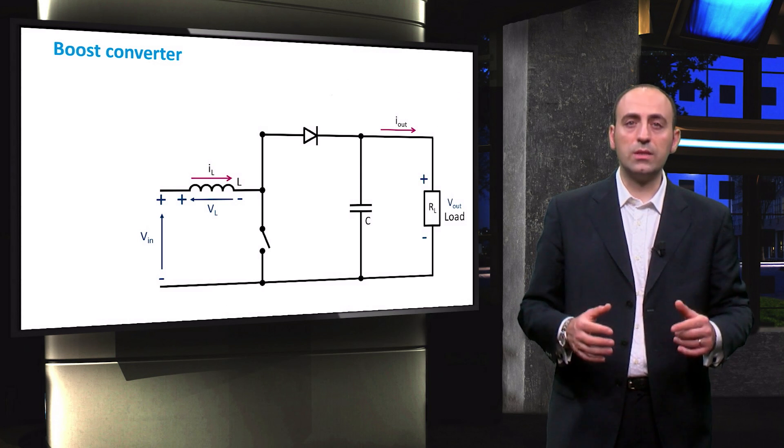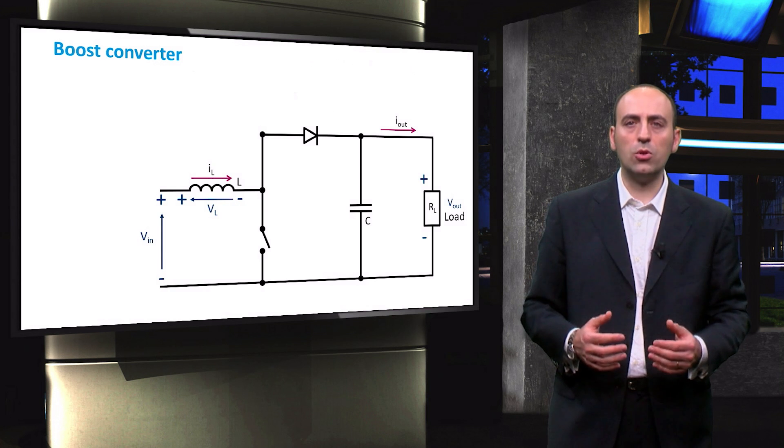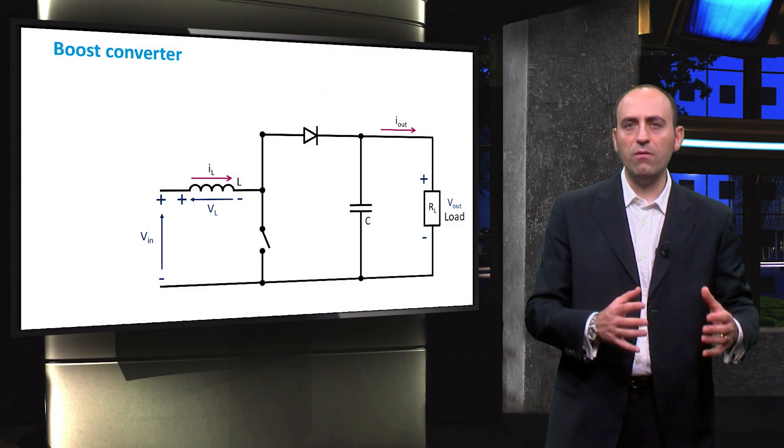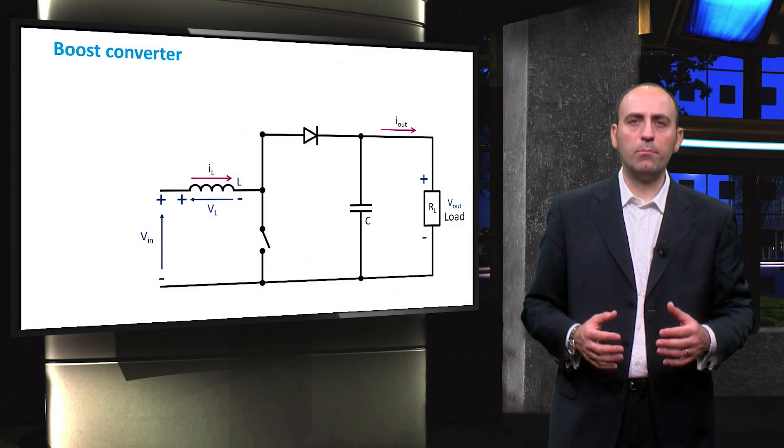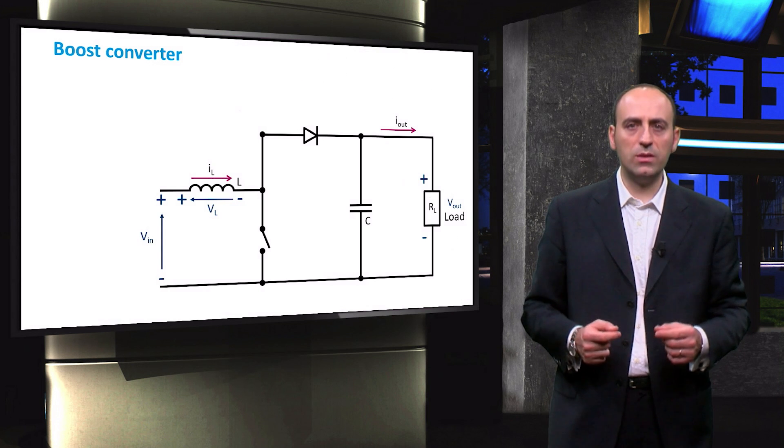Notice that in this case, the polarity of the PV module is the same as the load. Both PV module and load have the positive sides connected with the same branch.